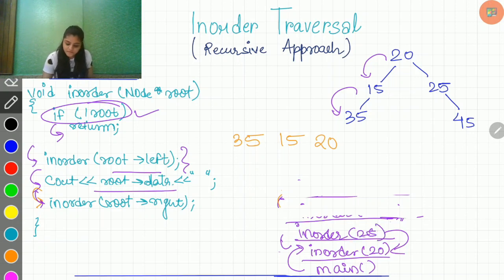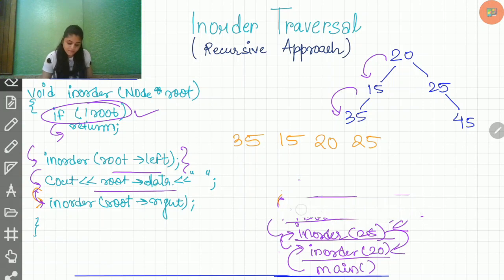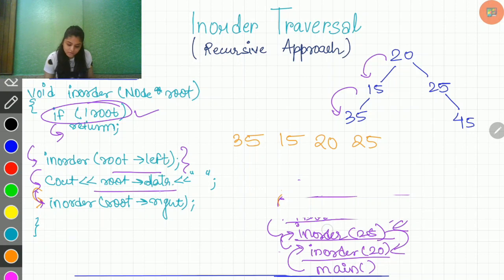And then this function will again call its left, which is null again. So again, this will return the control to this function. It will just print its data and this will get eliminated from the stack. And this function will again call. Now we have printed the data. Now it will call its right.